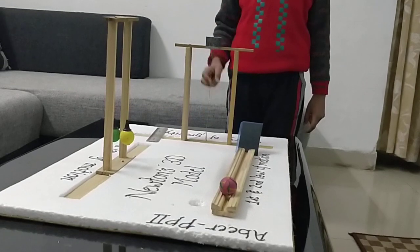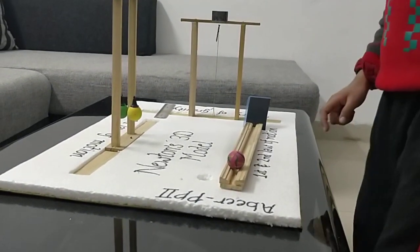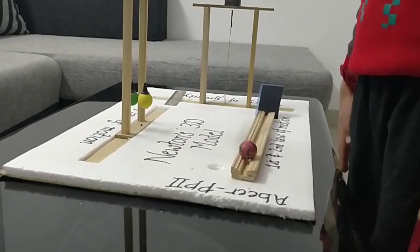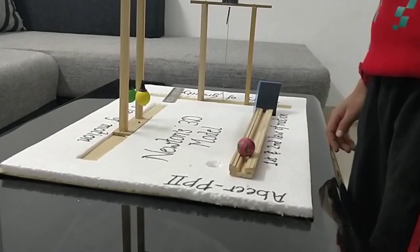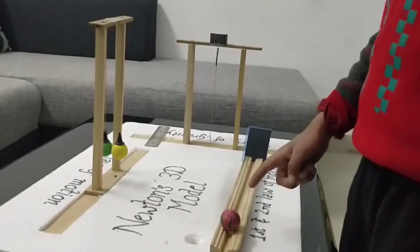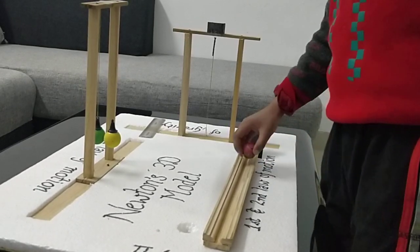Newton also discovered three laws of motion. First, an object will remain at rest or in motion unless external force is applied to it. This ball is at rest. When external force is applied to it, it starts moving.